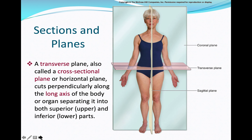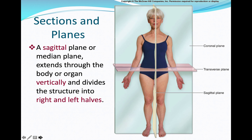The transverse plane, also called the cross-sectional or horizontal plane, is cut perpendicular to the long axis of the body. It divides the body into upper and lower parts — superior and inferior.